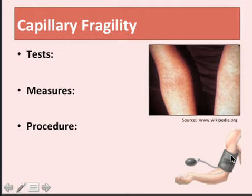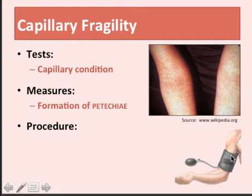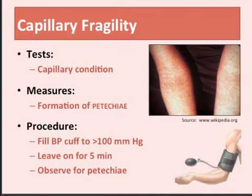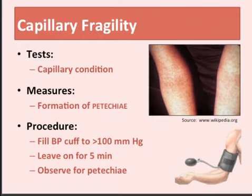Capillary fragility is a test for measuring the capillaries' condition. What we're doing in this test is inducing the formation of something called petechiae — tiny little ruptures of the capillaries that form what look like little tiny bruises. In this case, we're actually inducing the formation of these petechiae. You put a blood pressure cuff on the arm of the patient and fill it to a little bit over 100 millimeters of mercury. You leave it on for five minutes, and then watch to see if petechiae form on the forearm. If the capillaries are excessively fragile, you will see the formation of these petechiae.